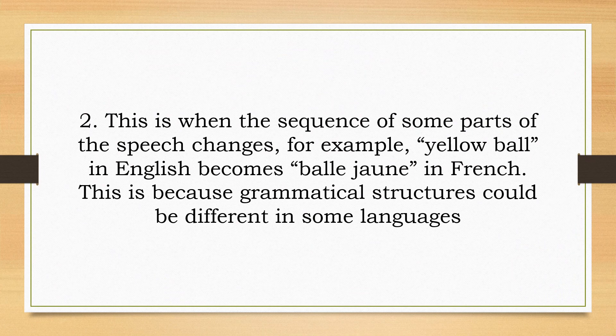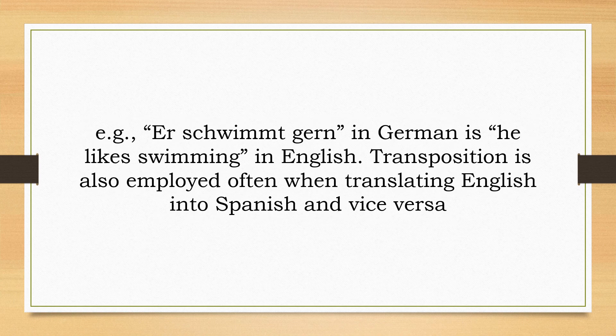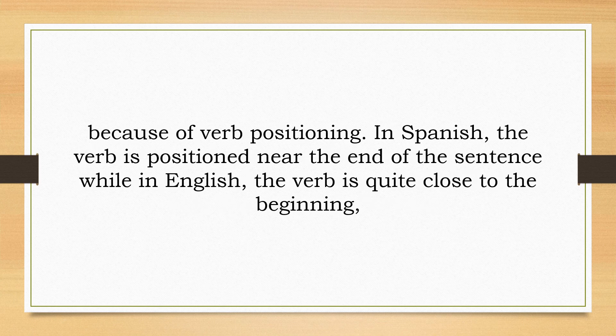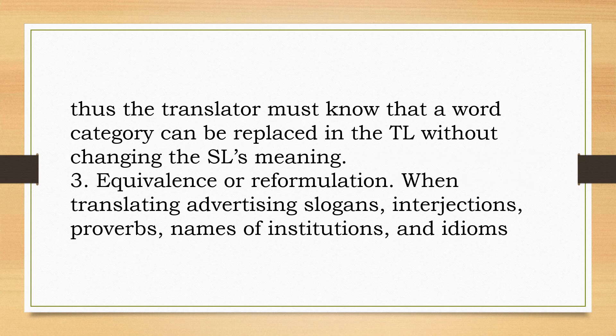2. Transposition: This is when the sequence of parts of speech changes. For example, 'yellow ball' in English becomes 'balle jaune' in French. Grammatical structures can differ between languages — for example, 'er schwimmt gern' in German is 'he likes swimming' in English. Transposition is also often employed when translating between English and Spanish because of verb positioning: in Spanish the verb is positioned near the end of the sentence, while in English the verb is close to the beginning. The translator must know that a word category can be replaced in the TL without changing the meaning.